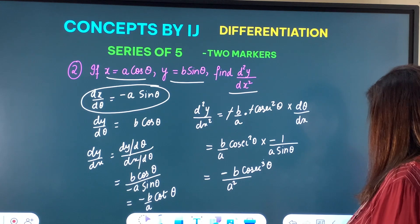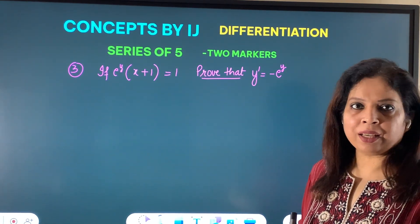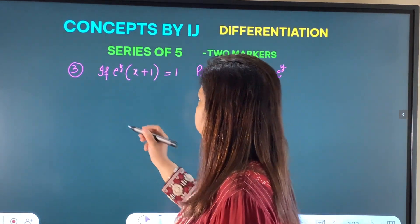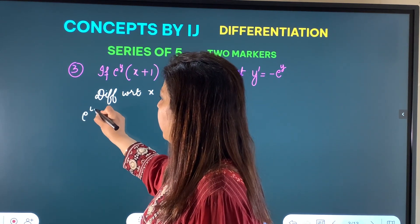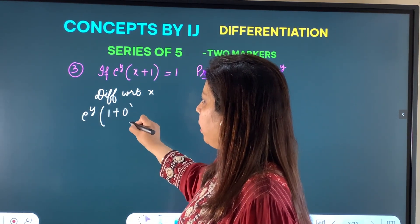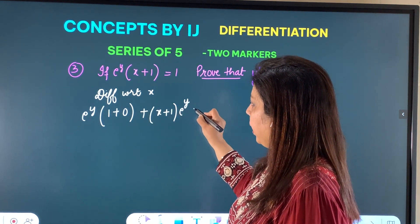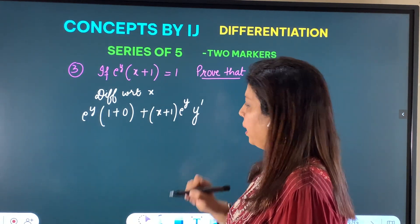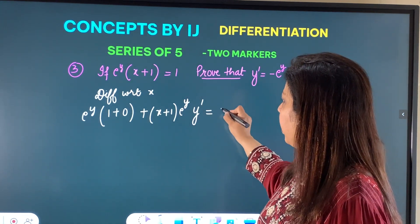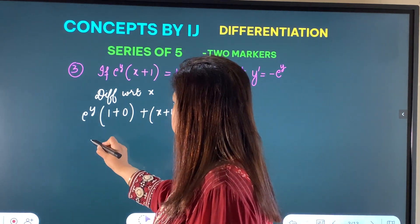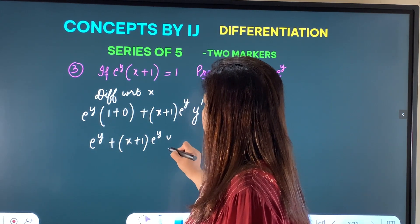Question 3: e^y · (x+1) = 1; prove that dy/dx = −e^y. Differentiate directly with respect to x. On the left-hand side, apply the product rule: derivative of (x+1) is 1, so (x+1) as it is times derivative of e^y — e^y remains but y must also be differentiated, giving e^y · y'. Plus e^y · 1. Right-hand side derivative of 1 is 0. So we get e^y + (x+1) e^y y' = 0.